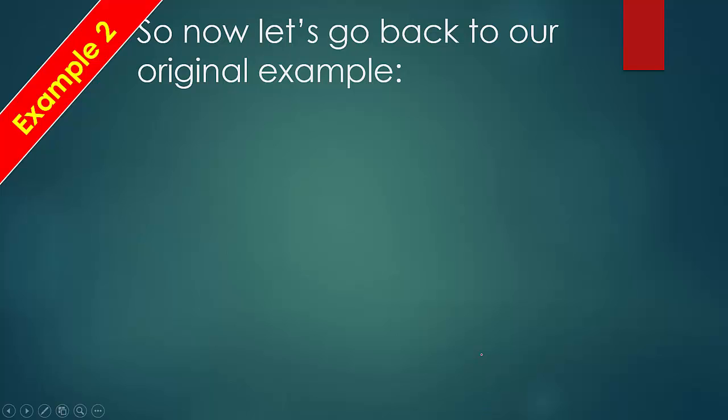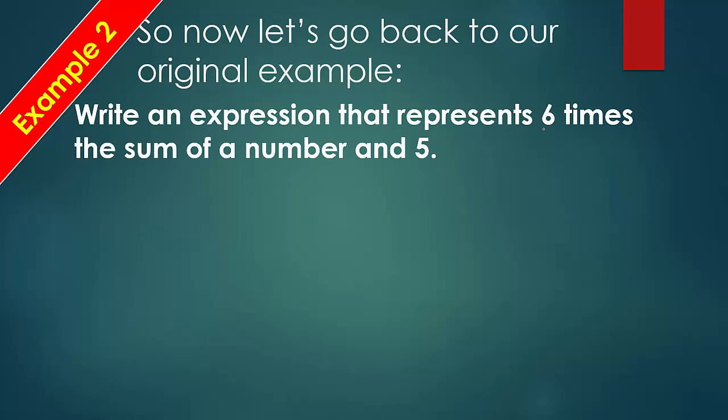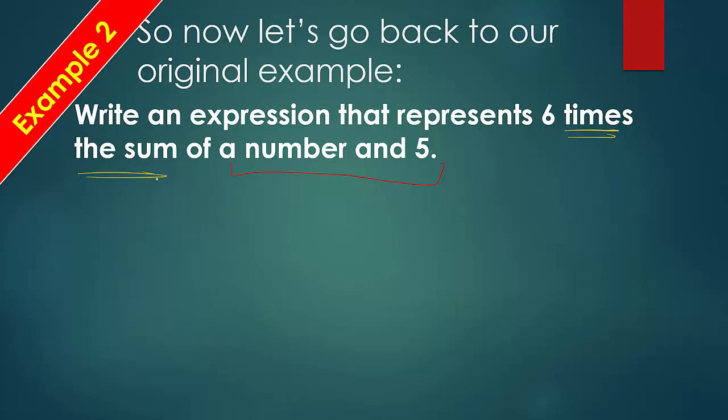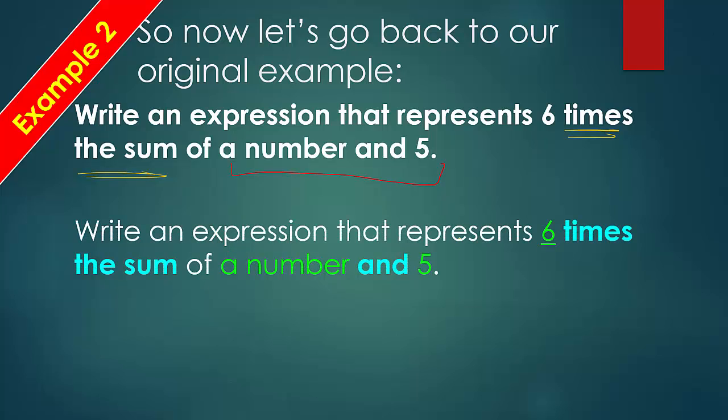Alright, so let's go back to our original example. Write an expression that represents six times the sum of a number in five. Okay, so it's six times the sum, so that means that this has to happen first. So, we're going to put that in parentheses, because it's six times the sum. So, when you see something like this, where it's an operator followed by another operator, that means that whatever this is right here is going to be in parentheses.